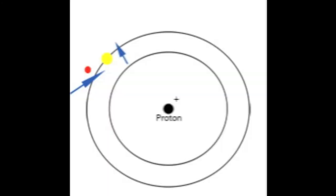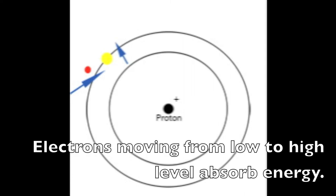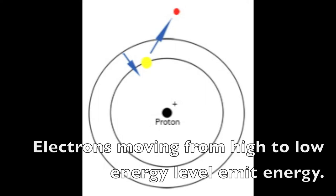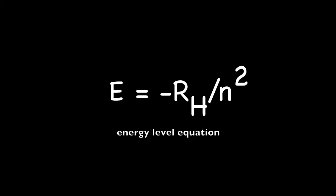In describing the transitions between energy levels, when electrons move from a lower energy level to a higher energy level, the electrons must absorb energy. Thus, the change in energy will be positive. And when electrons move from a higher energy level to a lower energy level, the electrons must emit energy, and thus the change in energy will be negative. This idea is best presented by the energy level equation.